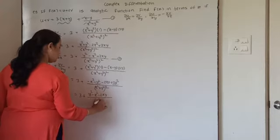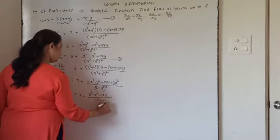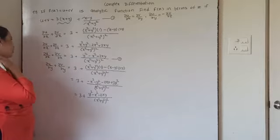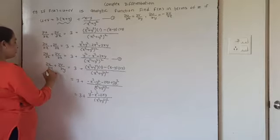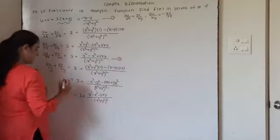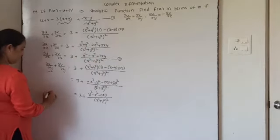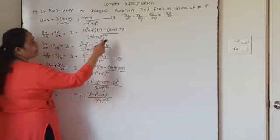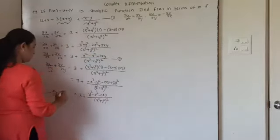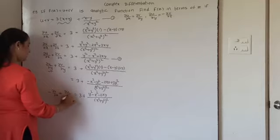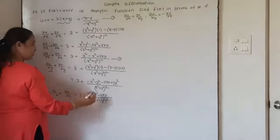Now if I use the CR equations here, we will substitute the value of ∂u/∂y: ∂u/∂y is minus ∂v/∂x, plus what is the value of ∂v/∂y? It is ∂u/∂x. Say this as equation number 3.